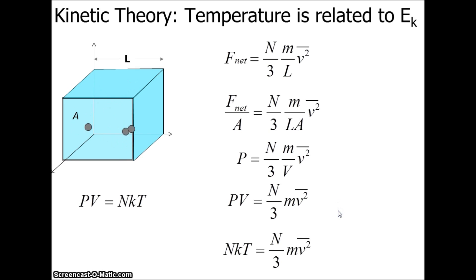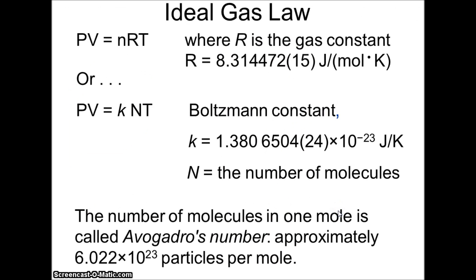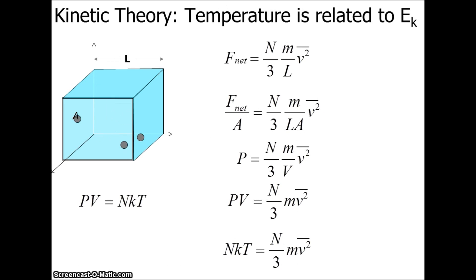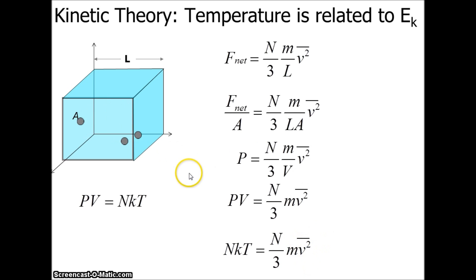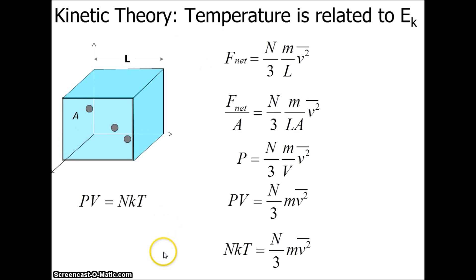Plugging PV = Nk_BT in, we find that the Boltzmann constant times the number of particles times the temperature is related to the average kinetic energy of the particles. So temperature is really related to the average kinetic energy of the particles.